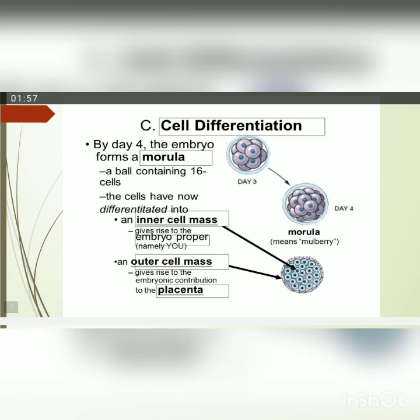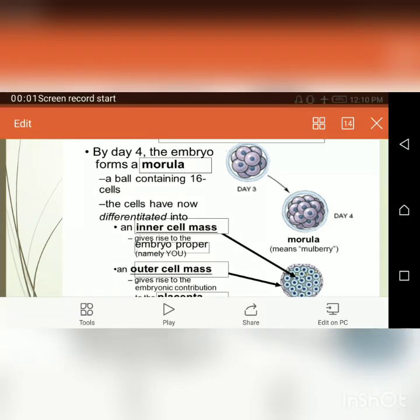By day four, the embryo forms a morula. The morula is a ball containing 16 cells, and it is a very compacted form of cells. Three days after fertilization, the morula enters the uterus.